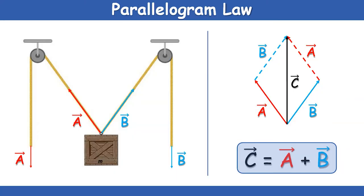Now let us have the parallelogram law of addition. There is another law to add two vectors. Suppose two vectors, vector A and vector B, are represented both in magnitude and direction by the two adjacent sides of a parallelogram. Then the resultant is given by the diagonal of the parallelogram passing through the common point. To draw the diagonal, you complete the parallelogram by drawing dotted lines. So A and B are the two adjacent sides and C is the diagonal. Therefore, as per the parallelogram law, vector C equals vector A plus vector B.